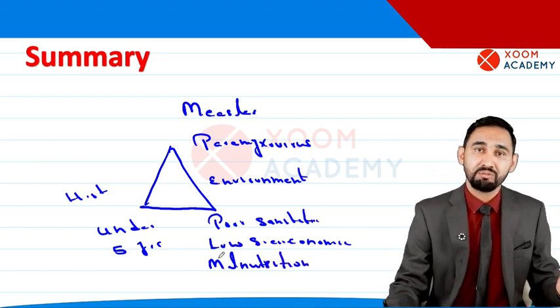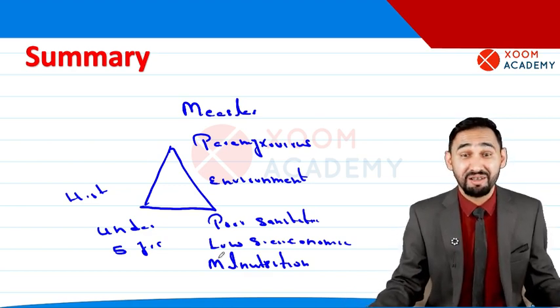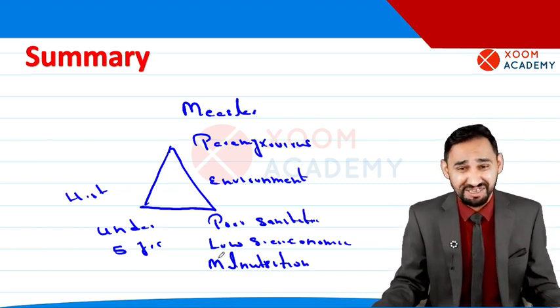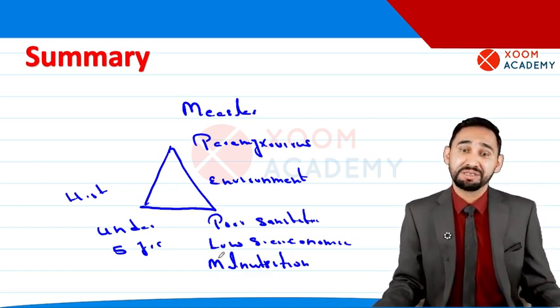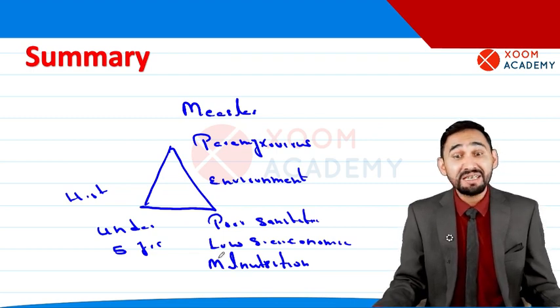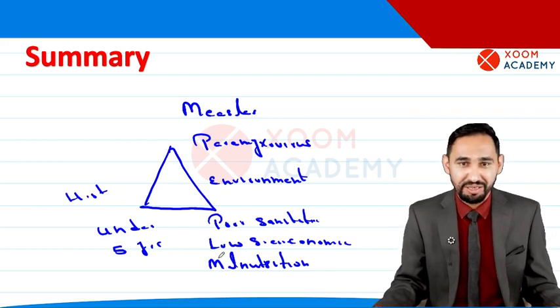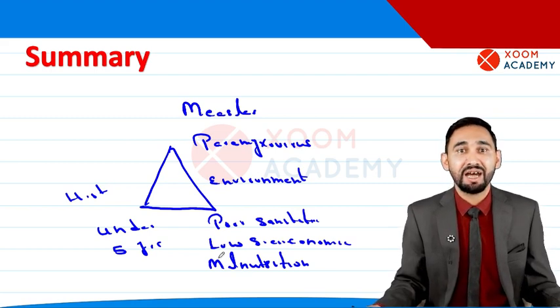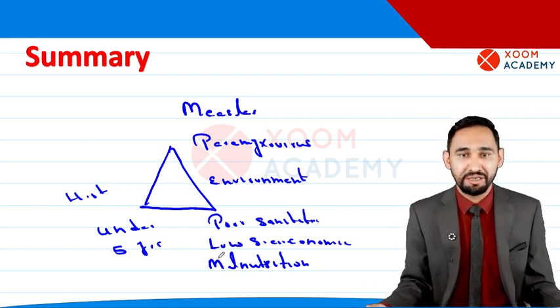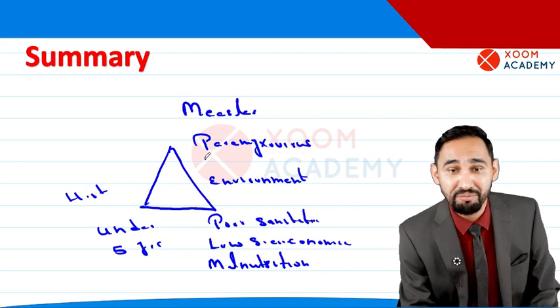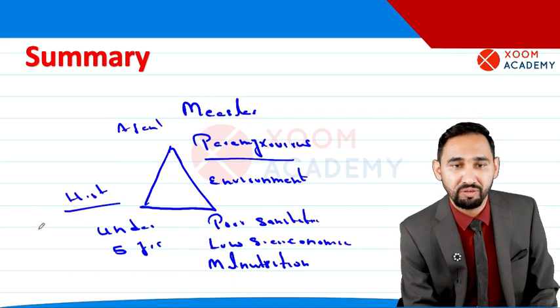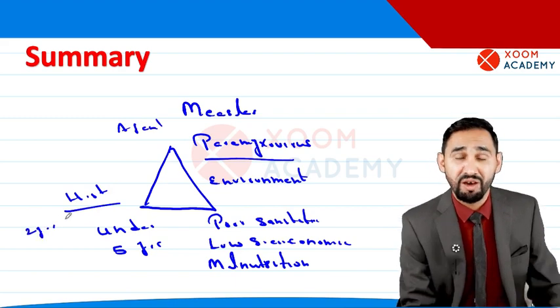This is epidemiological triad of measles. It's a common question in exams. They say child of two years develops rash, has Koplik's spots which is diagnostic sign of measles, and lives in poor environment. He has low socioeconomic status, he is malnourished. Diagnose the disease. You may say measles. And then they say draw and label epidemiological triad. So you have to write agent: paramyxovirus. Host: according to scenario, two years. Environment: poor sanitation, low socioeconomic status, malnutrition.